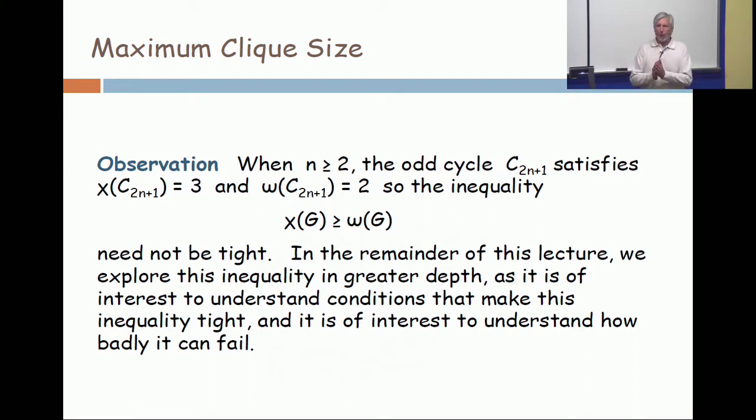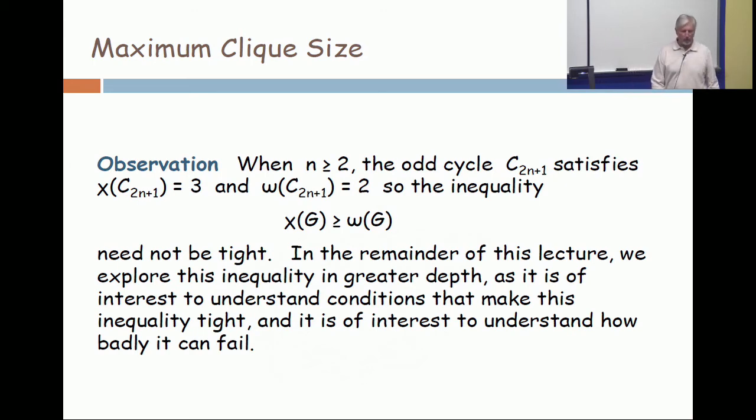So we're going to explore instances in which the chromatic number is much bigger than the maximum clique size. We're also going to look at the general question of whether there is interest in graphs where it's tight. First we're going to look at the case where there is a disparity. What we're going to show is that you can make the difference arbitrarily large: you can make the chromatic number as big as you want while keeping the maximum clique size only two, just like it is in an odd cycle.